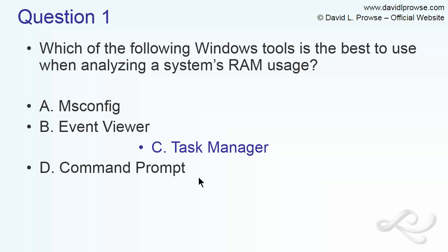The command prompt you can open from the Start menu or by typing CMD at the run prompt. That's your command line interface. You can find some information about RAM from there, but not nearly as much as in Task Manager. Task Manager also has a GUI, so it's easier to analyze what's happening on the system. That's question one.